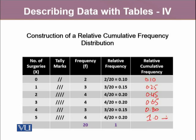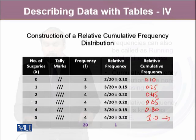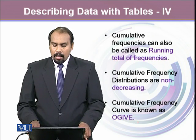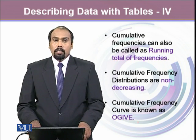The last value in the relative cumulative frequency is the sum of the relative frequency. They should be the same. Cumulative frequencies can also be called running totals of frequencies.